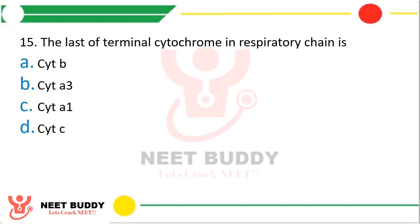Question 15: The last of the terminal cytochromes in the respiratory chain is — cytochrome b, cytochrome a3, cytochrome a, or cytochrome c? The correct answer is option B — cytochrome a3 is the last terminal cytochrome in the respiratory chain.